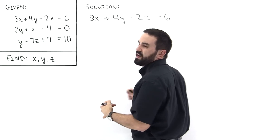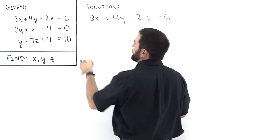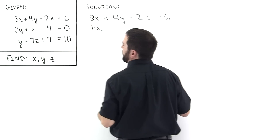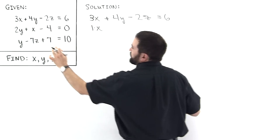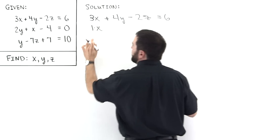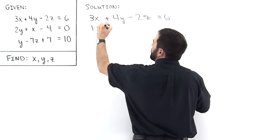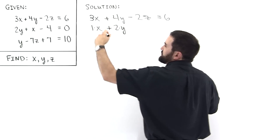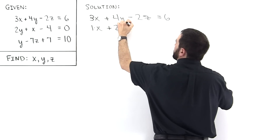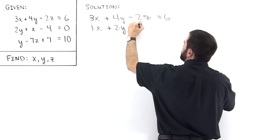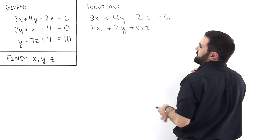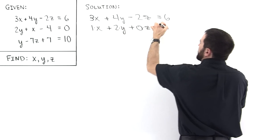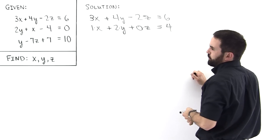The second equation we're going to have to rearrange a little bit. We'll have 1 times x — switching the x and the 2y around, because there's an understood 1 right here, so we put the 1 in front — plus 2 times y. There's no z in this equation, so we put a placeholder: plus 0 times z. Then bringing that 4 over to this side, it's equal to positive 4.